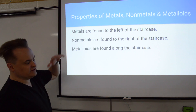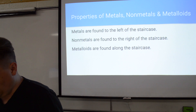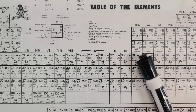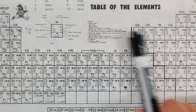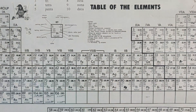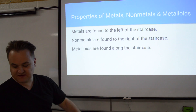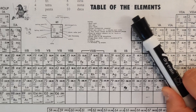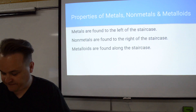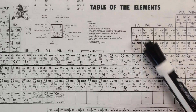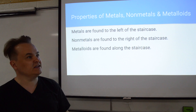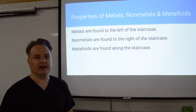Metals are found to the left of the staircase — anything to the left of the staircase is a metal. Non-metals are found to the right of the staircase, and metalloids are found along the staircase. So that's the first thing you need to know: where they're located.